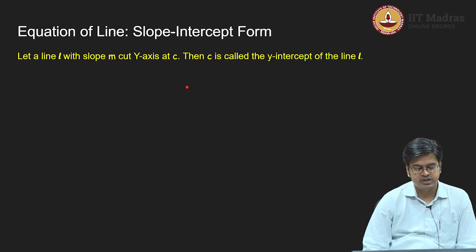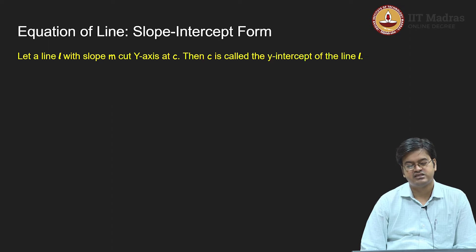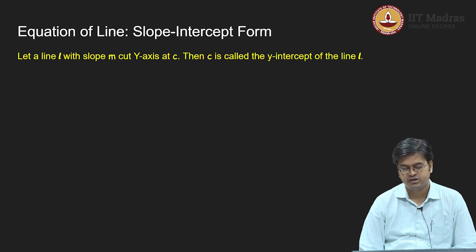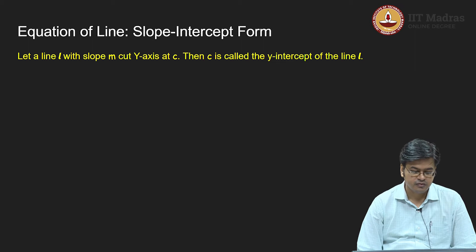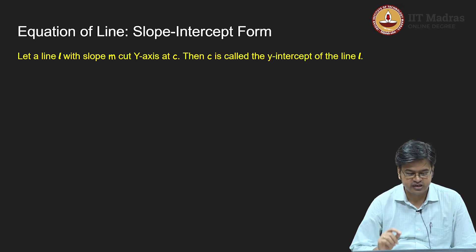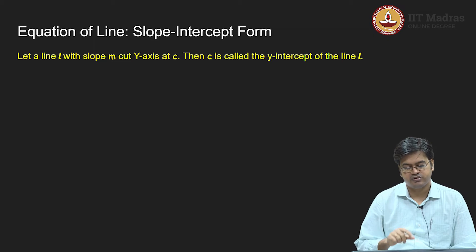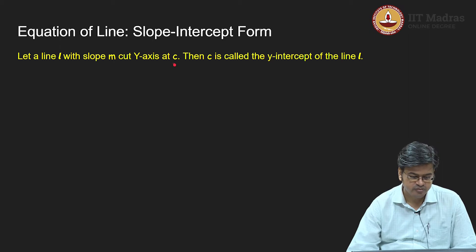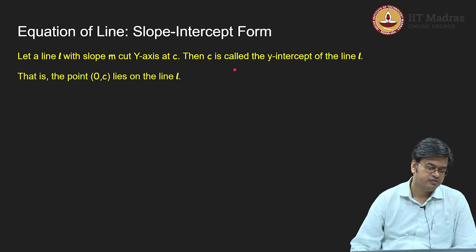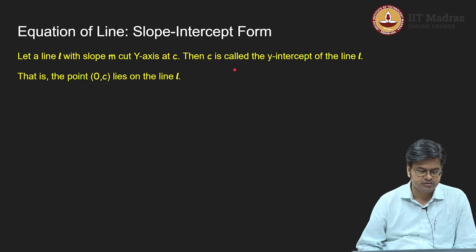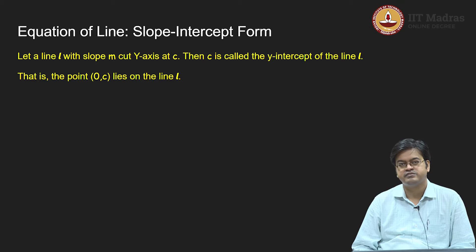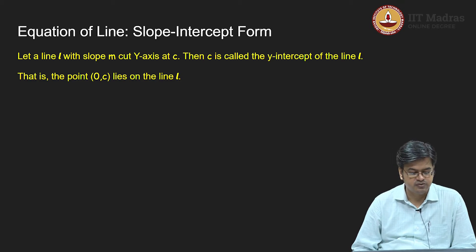Let L be the line with slope m that cuts the y-axis at point C. Then this C is called the y-intercept of the line L. The meaning is that the y-coordinate of that point is C and the x-coordinate is 0. That means any point where line L cuts through the y-axis will be of the form (0, C), and that point (0, C) will lie on line L.